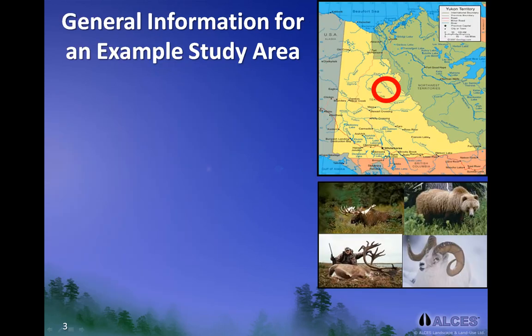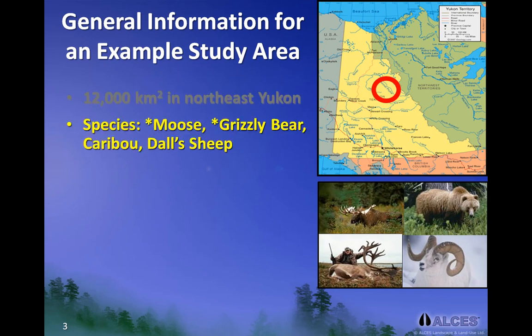Our example study area is in Northeast Yukon. We chose this area because it is remote and has little to no human footprint, so our modeling assumptions and data needs were reduced. The area was about 12,000 square kilometers, which is roughly equivalent to an area 110 kilometers by 110 kilometers. The species we were interested in modeling was moose, but the area is also home to other large mammals like caribou, Dall sheep, and grizzly bear.